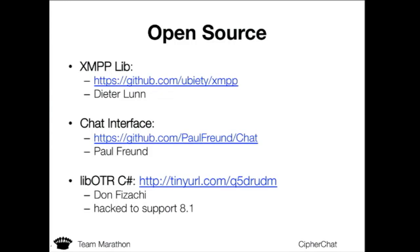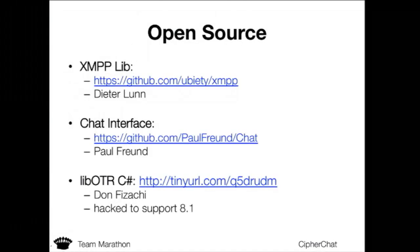We used an XMPP library we found on GitHub, but everything was compiled under the old version of Windows, and none of us knew how to compile for Windows — we had to learn how to upgrade to Windows 8.1. We have a chat interface using the XMPP protocol and the libOTR library, which doesn't use the new cryptography libraries for Windows 8.1. So we had to re-implement the entire cryptography library for OTR for Windows apps. We'll put it on GitHub so anyone can clone it.